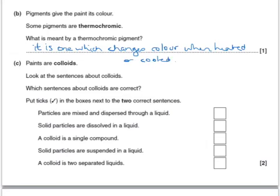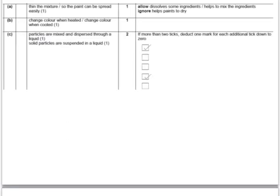The next question is about paints and colloids. Look at the sentences about colloids — which are correct? There are two correct answers. 'Particles are mixed and dispersed throughout a liquid' — yes, that is correct. 'Solid particles are dissolved' — no, they are not dissolved; they are dispersed but not dissolved. 'A colloid is a single compound' — no, it is a mixture. 'Solid particles are suspended in a liquid' — yes, that is correct. 'A colloid is two separated liquids' — no, they are not separate. Those are the allowable answers.